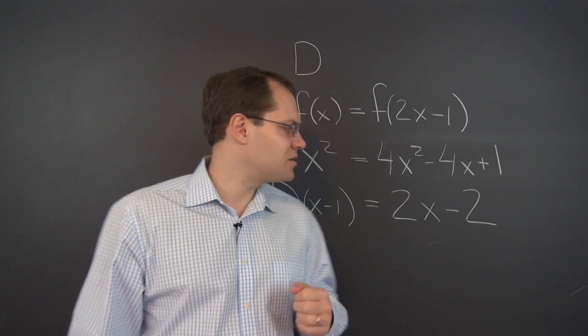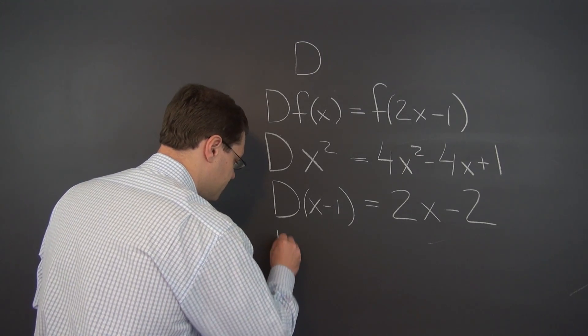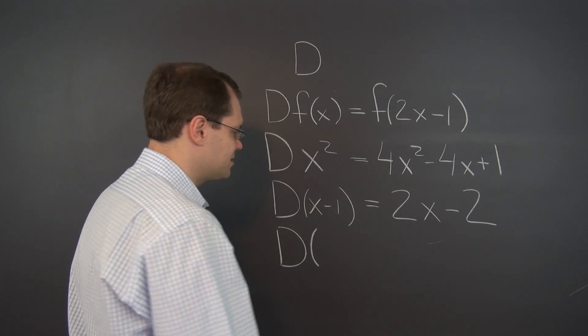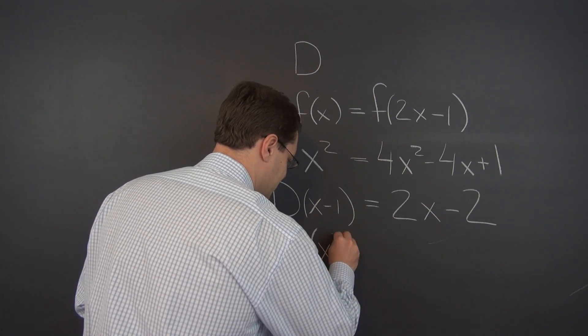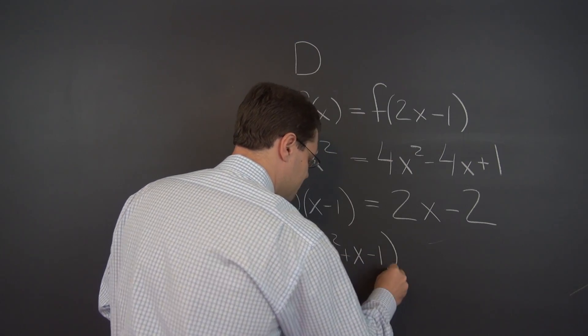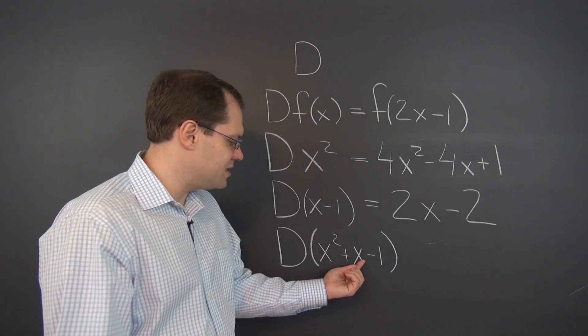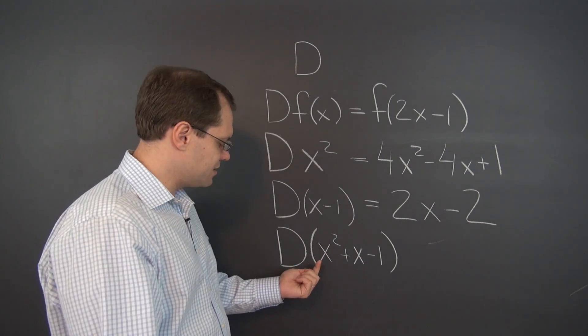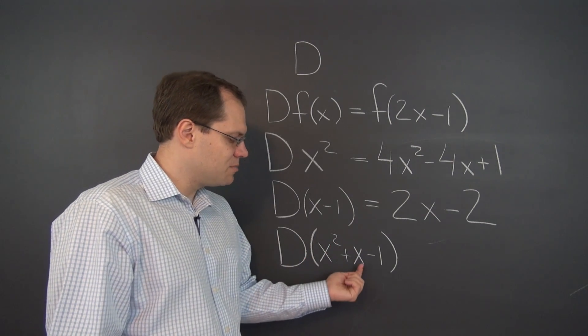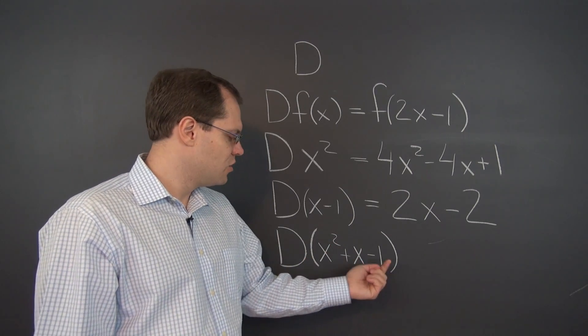Alright, let's consider one more example. D, just we're going to target our linearity test. So we'll consider the sum of these functions: x² + x - 1. Now, the rule remains the same. Wherever you see x, plug in 2x minus 1. So this will be (2x - 1)² plus (2x - 1) minus 1.